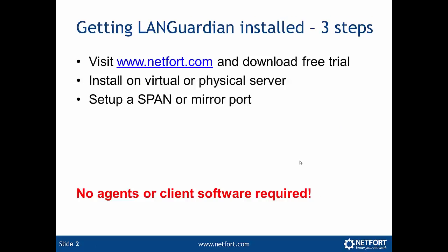If you want to get Languardian installed on your network there are three easy steps. First, visit network.com and download your free trial there — it's a fully featured trial, all options are enabled. You can install it on a physical or a virtual server. And finally, you just need to set up a span or mirror port as a source of data. Remember, no agent or client software is required, so it's zero impact on your network. You don't need to be installing stuff on your servers or your clients.